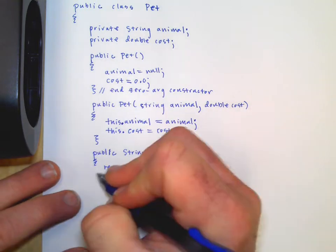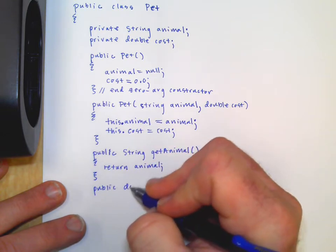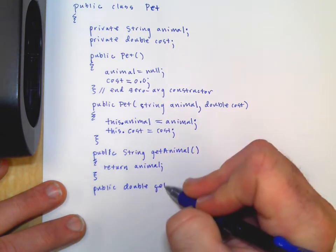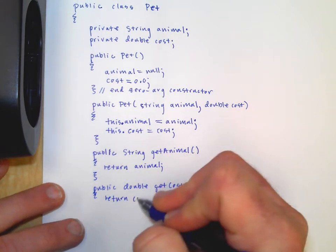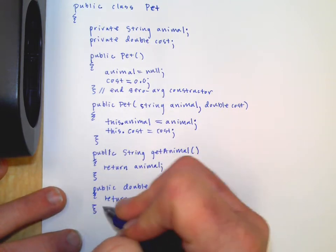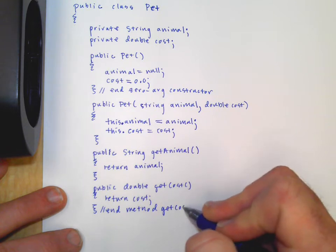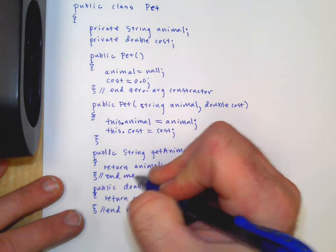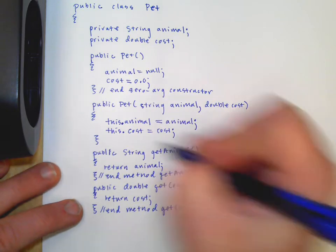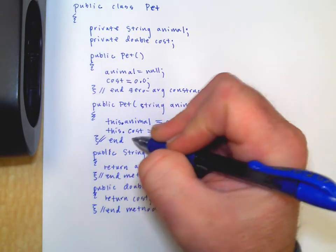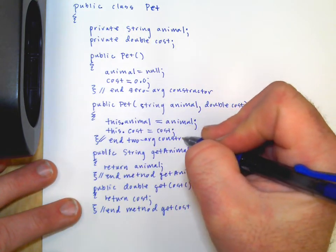We can do for the cost to public double, you've got to say that the return type get cost. And just end returns the cost. End method get cost. End method get animal. End to arg constructor.